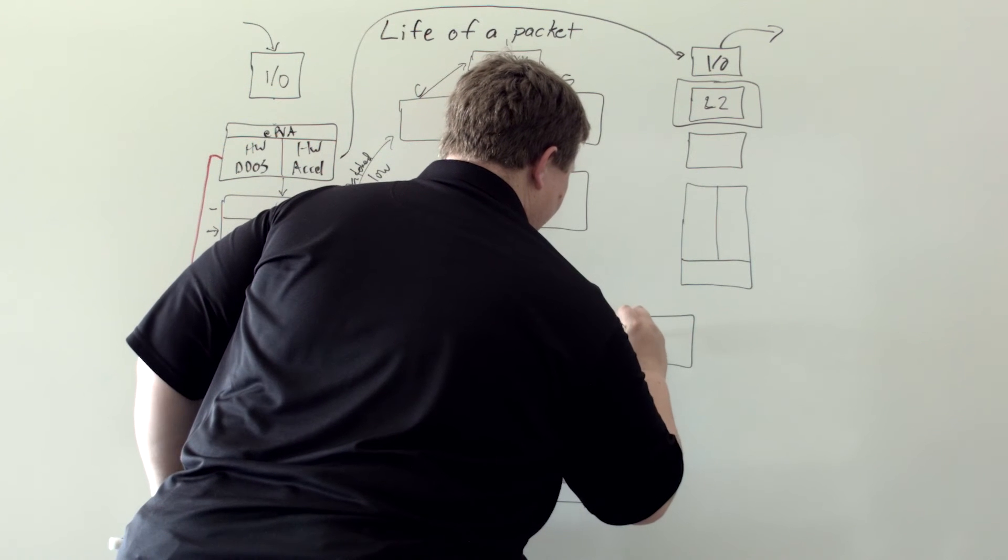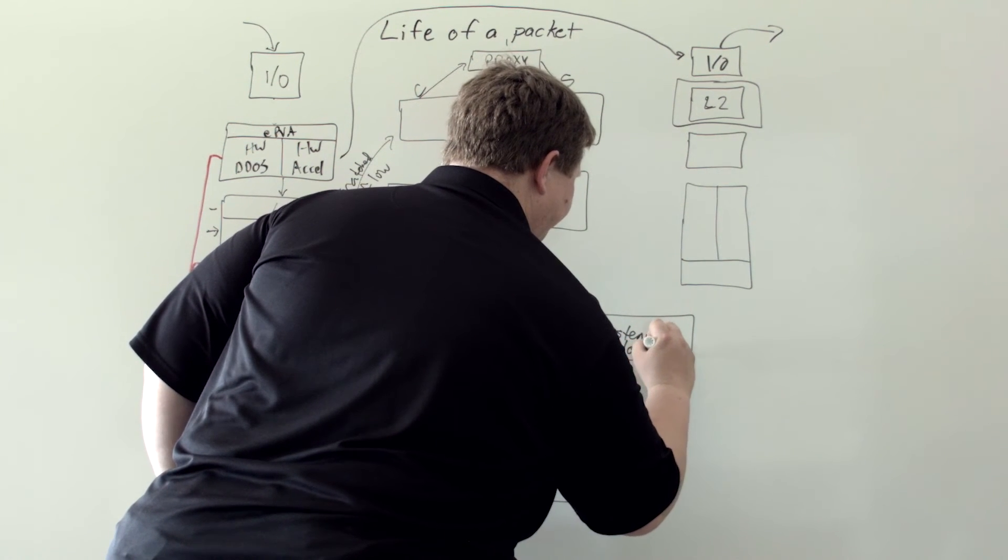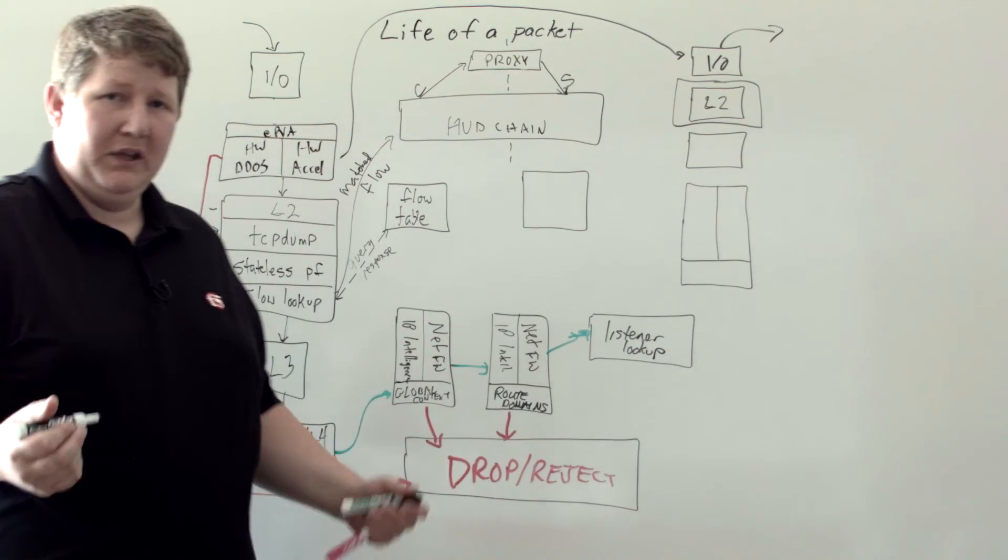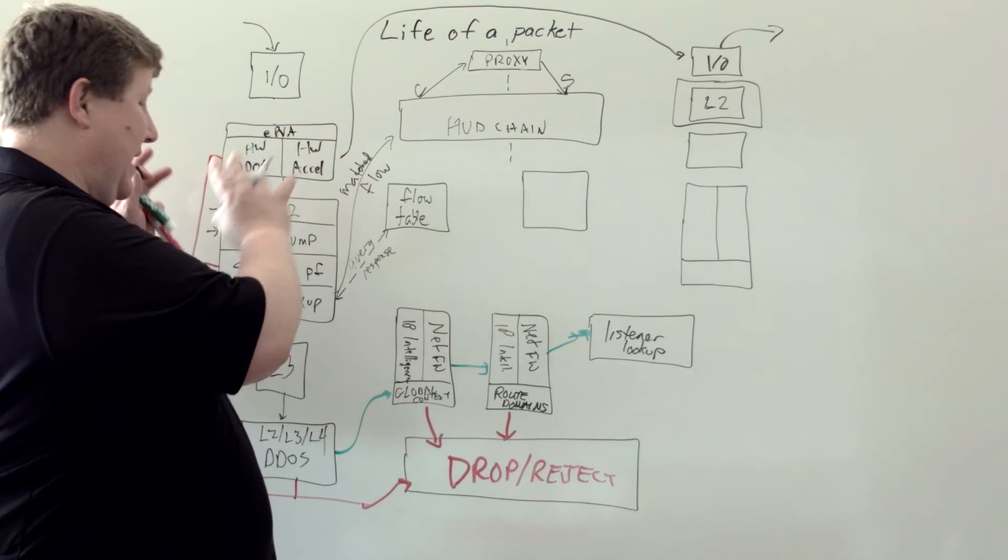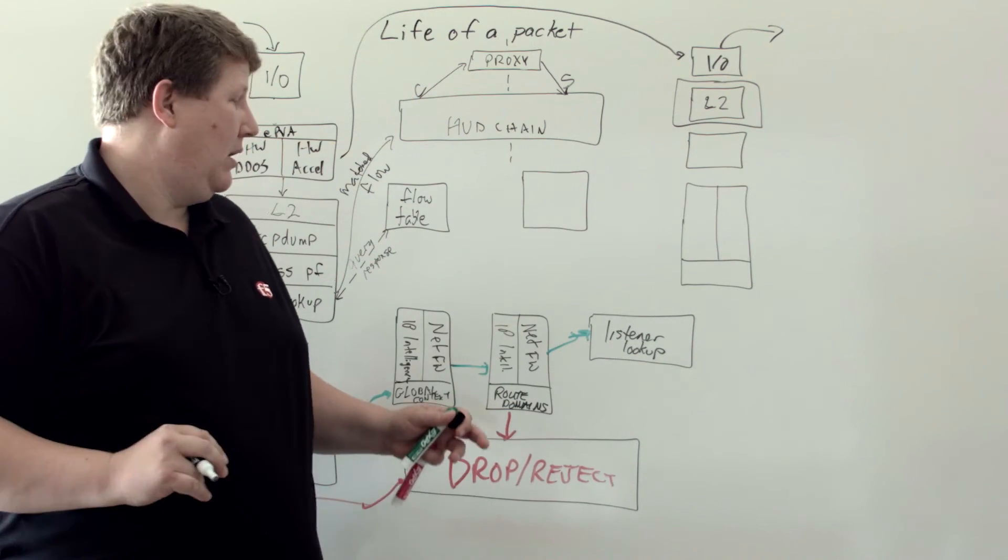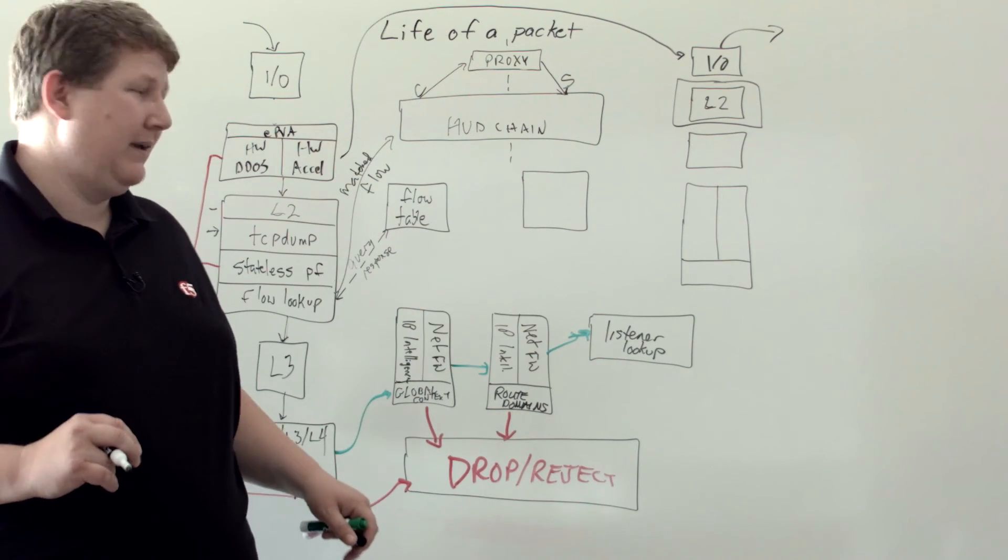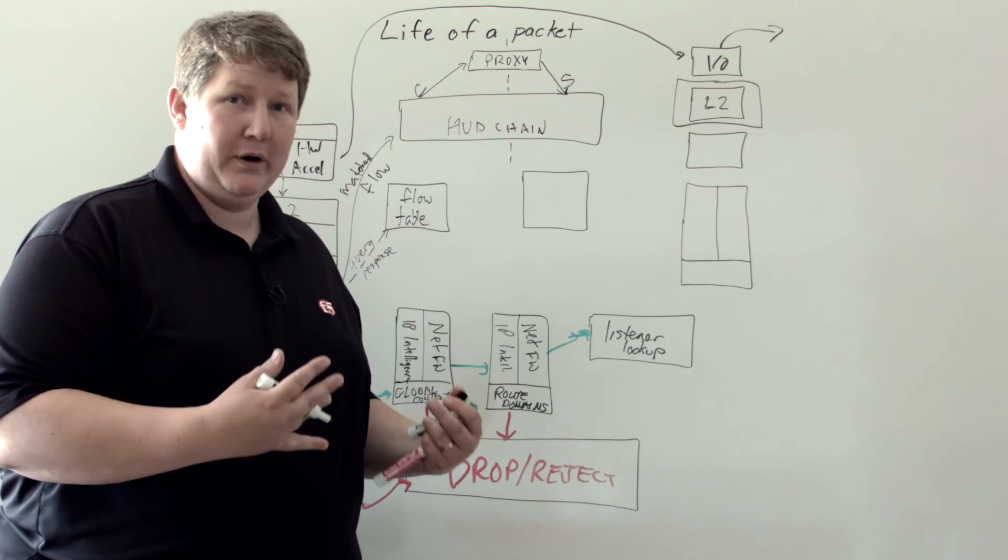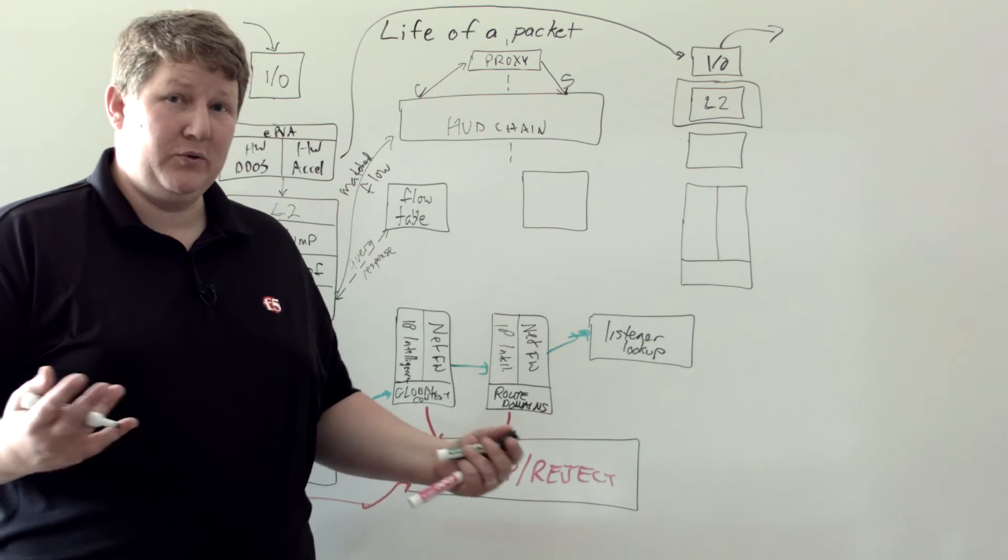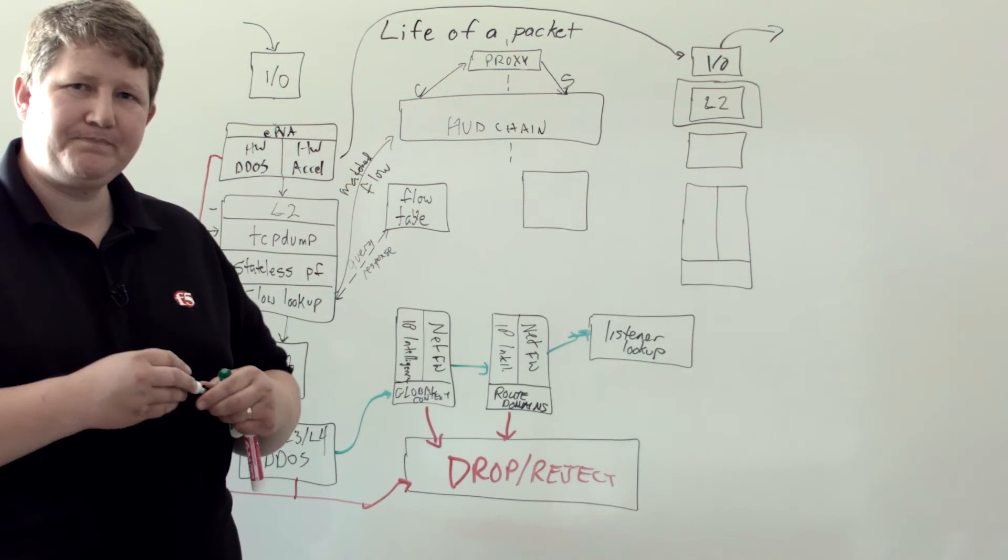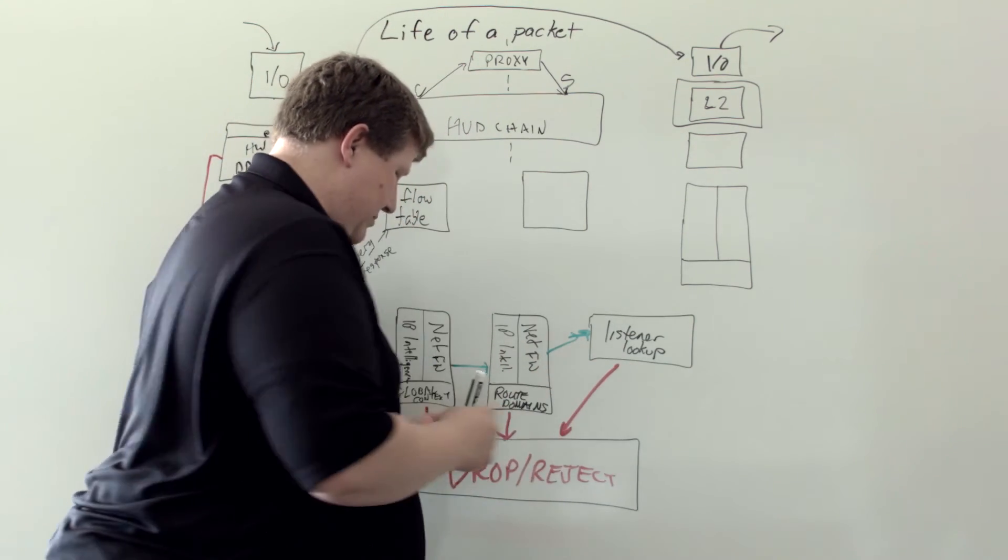If you're familiar with any of the other talks that we've done, a listener is what allows traffic to flow through the box. So all of this is kind of pre-listener. There are some pre-checks, obviously, along the way that are going to drop traffic. But you're never going to get to a forward traffic state without having a listener because we're a default deny box. If there's no listener, obviously there's no match and we're going to drop or reject that traffic.